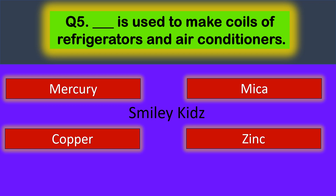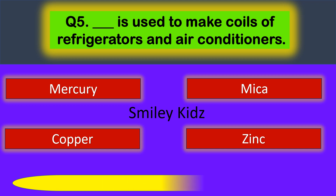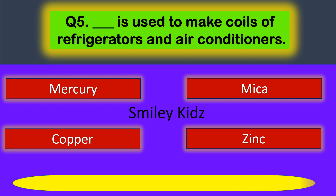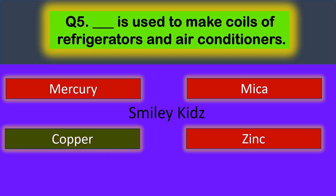Question five: Dash is used to make coils of refrigerators and air conditioners. Your options are mercury, mica, copper, and zinc. The correct answer is copper. Copper is used to make coils of refrigerators and air conditioners.